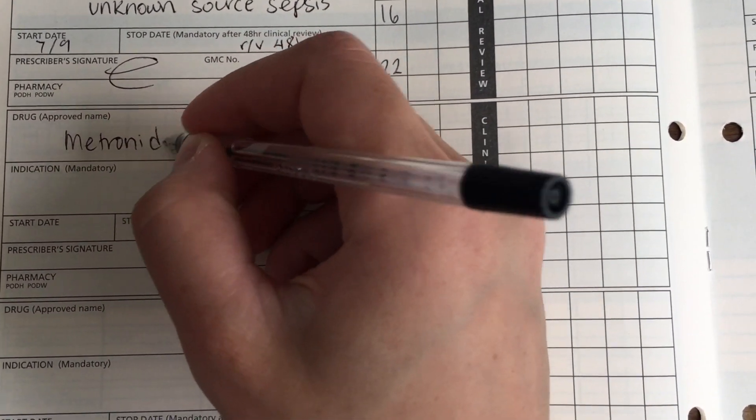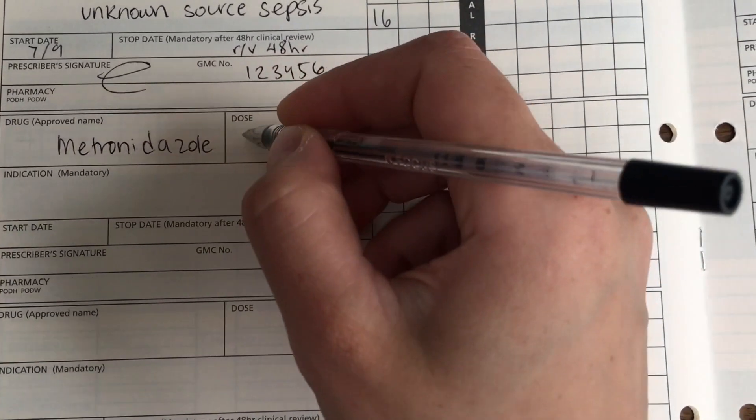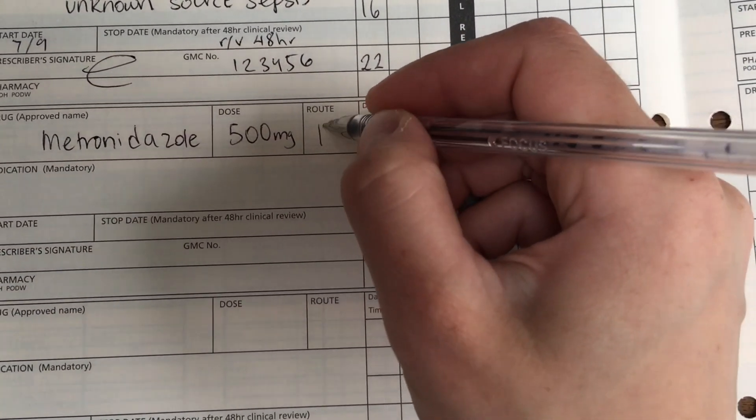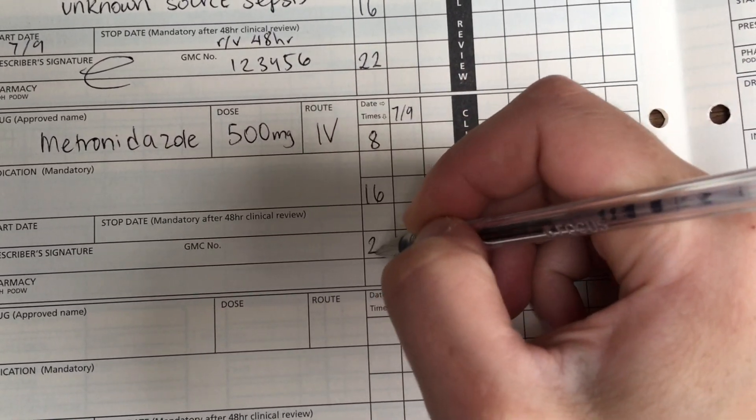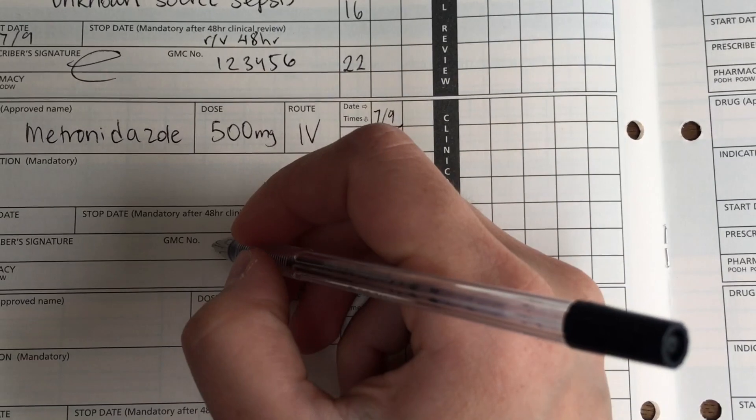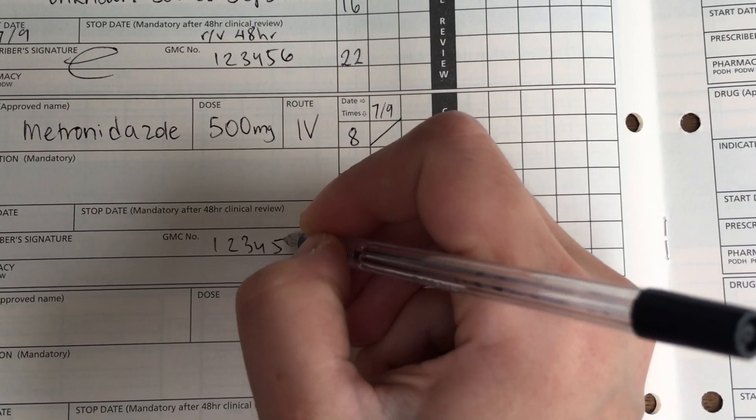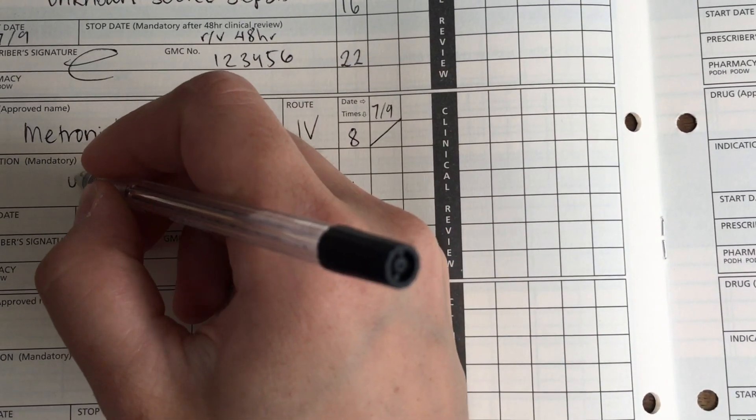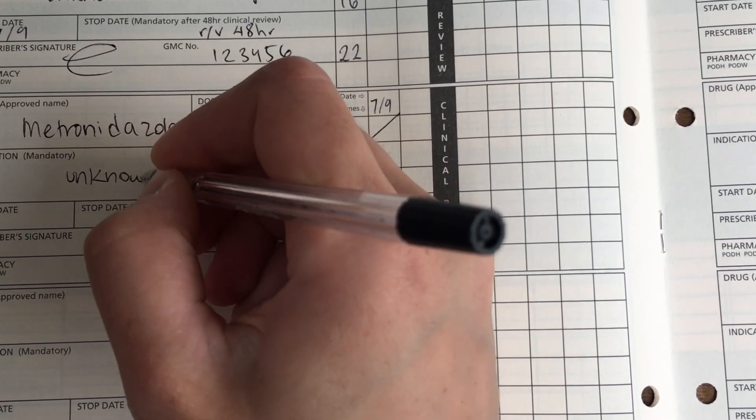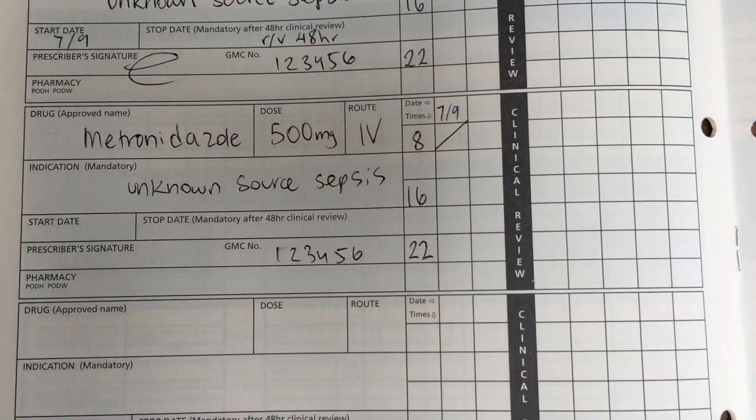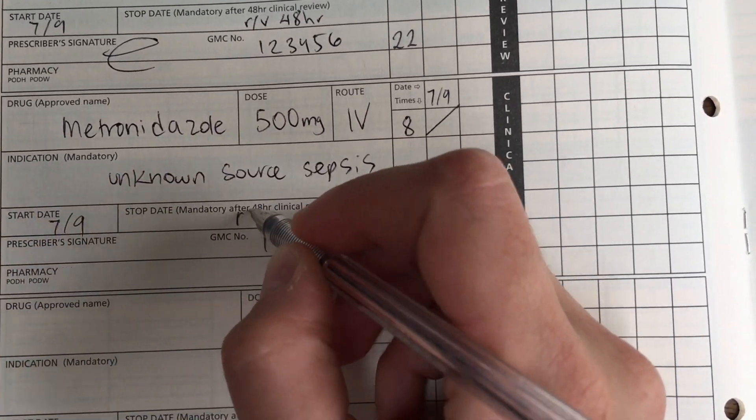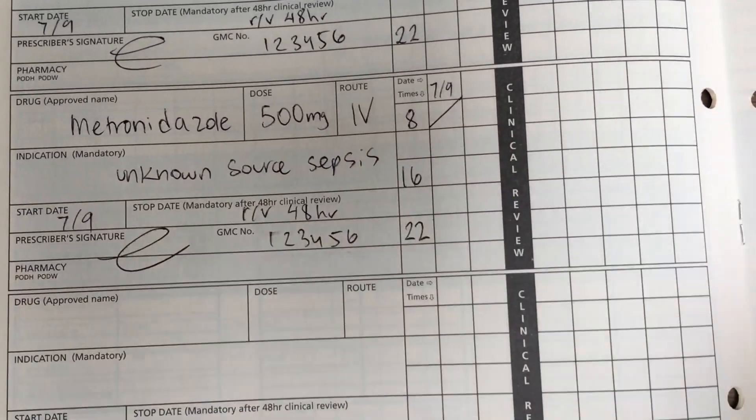The next one is metronidazole. So, this is part of AMG that I mentioned. This is 500 milligrams IV. You put the date, you give it three times a day, and note that initially, for sepsis unknown source, we may start by giving IV antibiotics. But once we have cultures that come back, and we have a better idea of what we're fighting, we may decide to give an oral dose, or to change those antibiotics. So, these three are a very common combination that you may give as antibiotics for a patient.